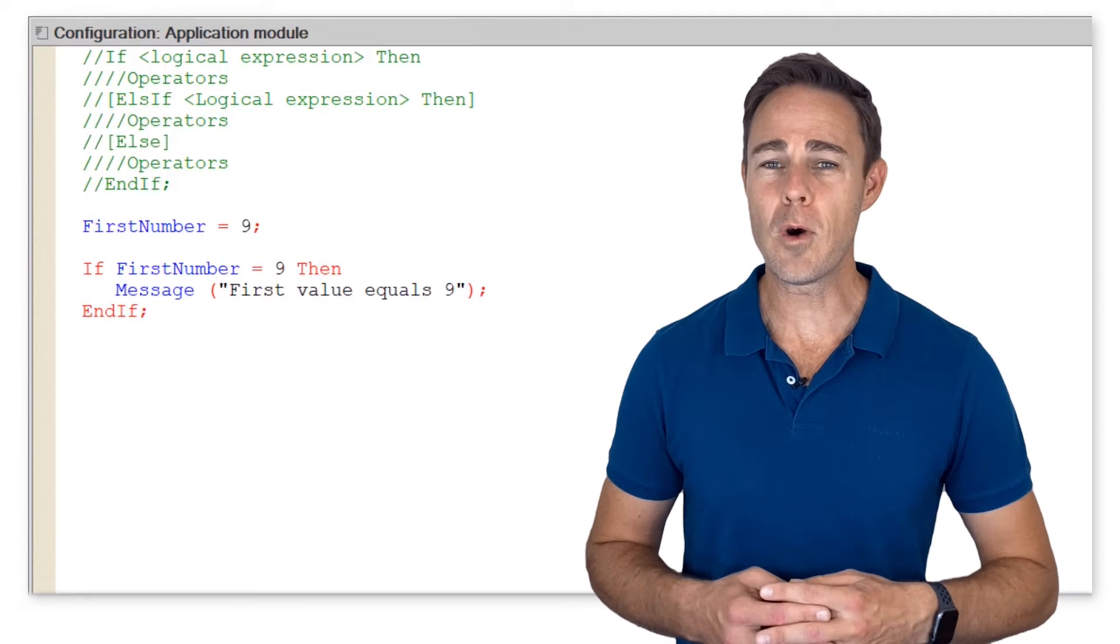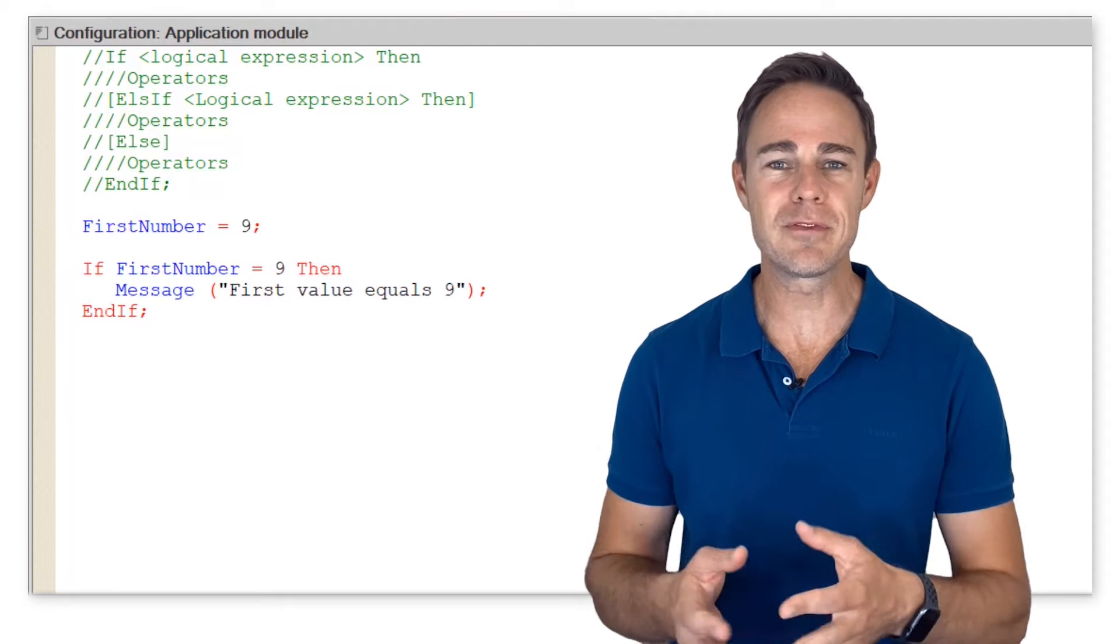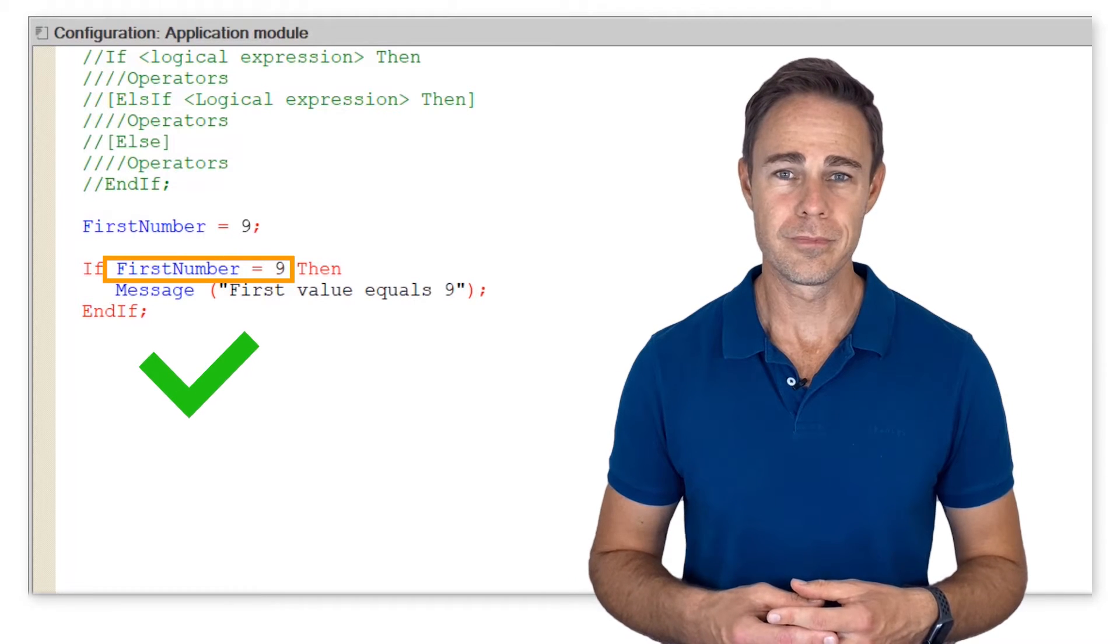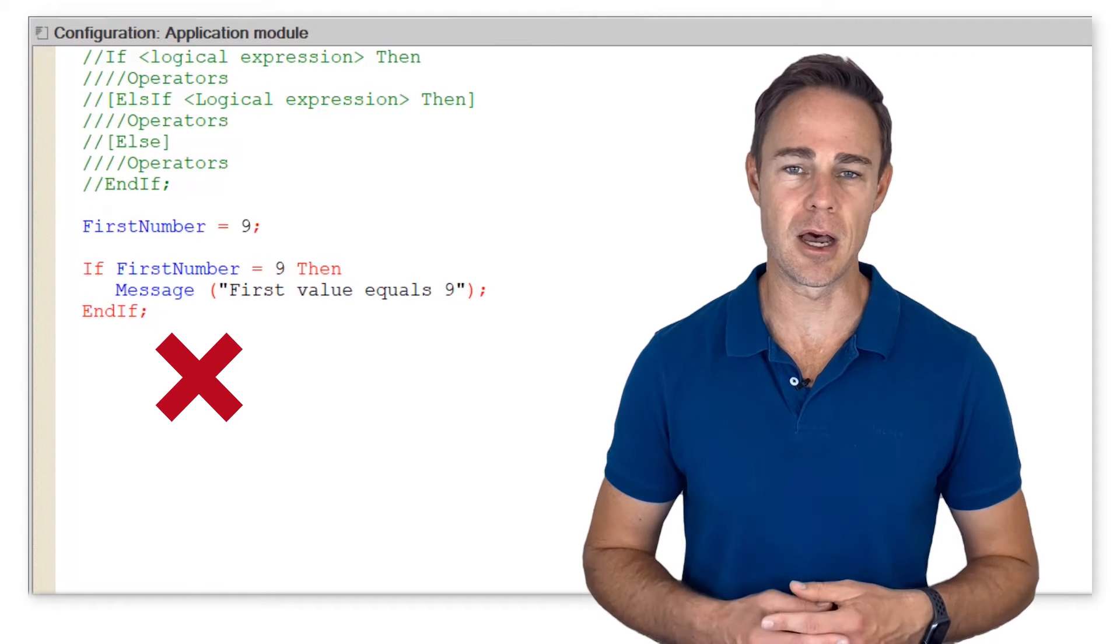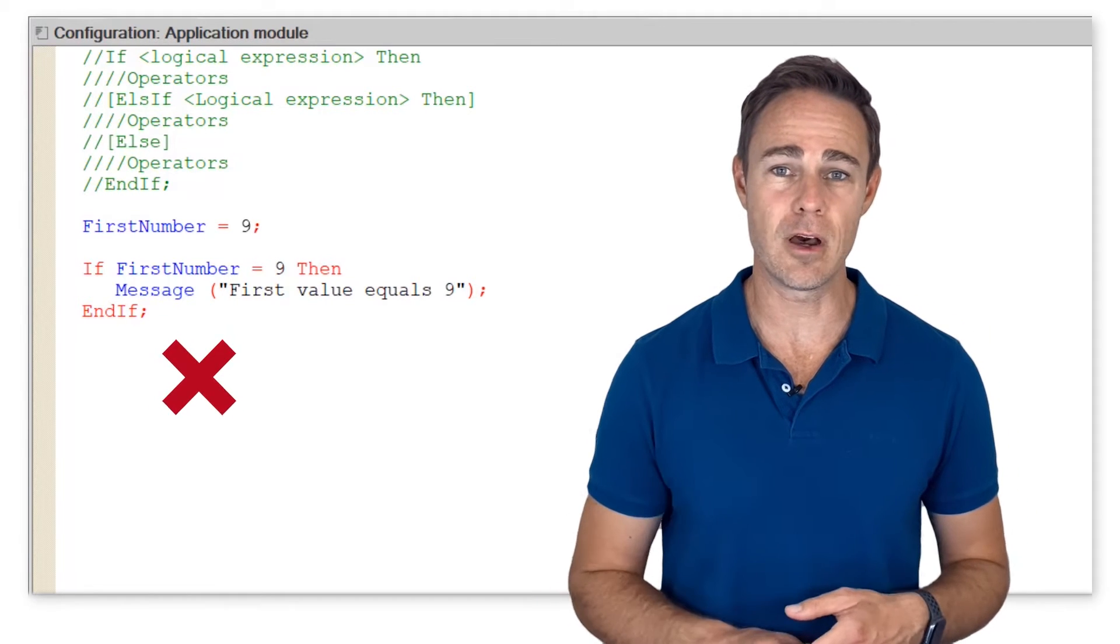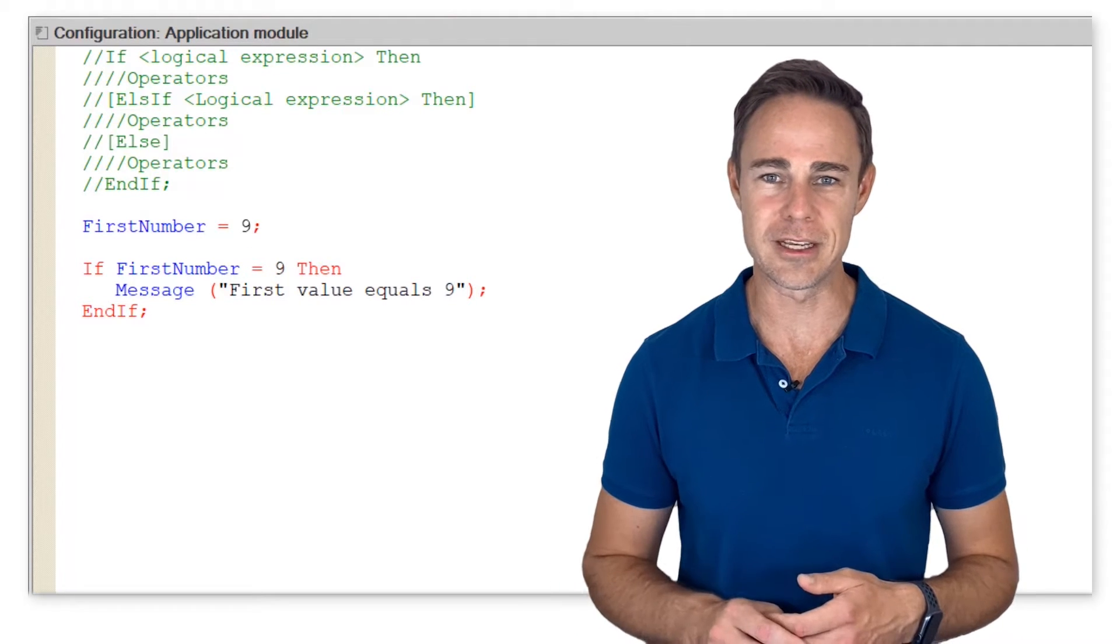There is only one condition and one operator. The system displays the message only if the logical expression is true. If the logical expression is false, the program skips this part of the code and proceeds to successive operators. Pay attention that this operator in our case is a comparison operator.